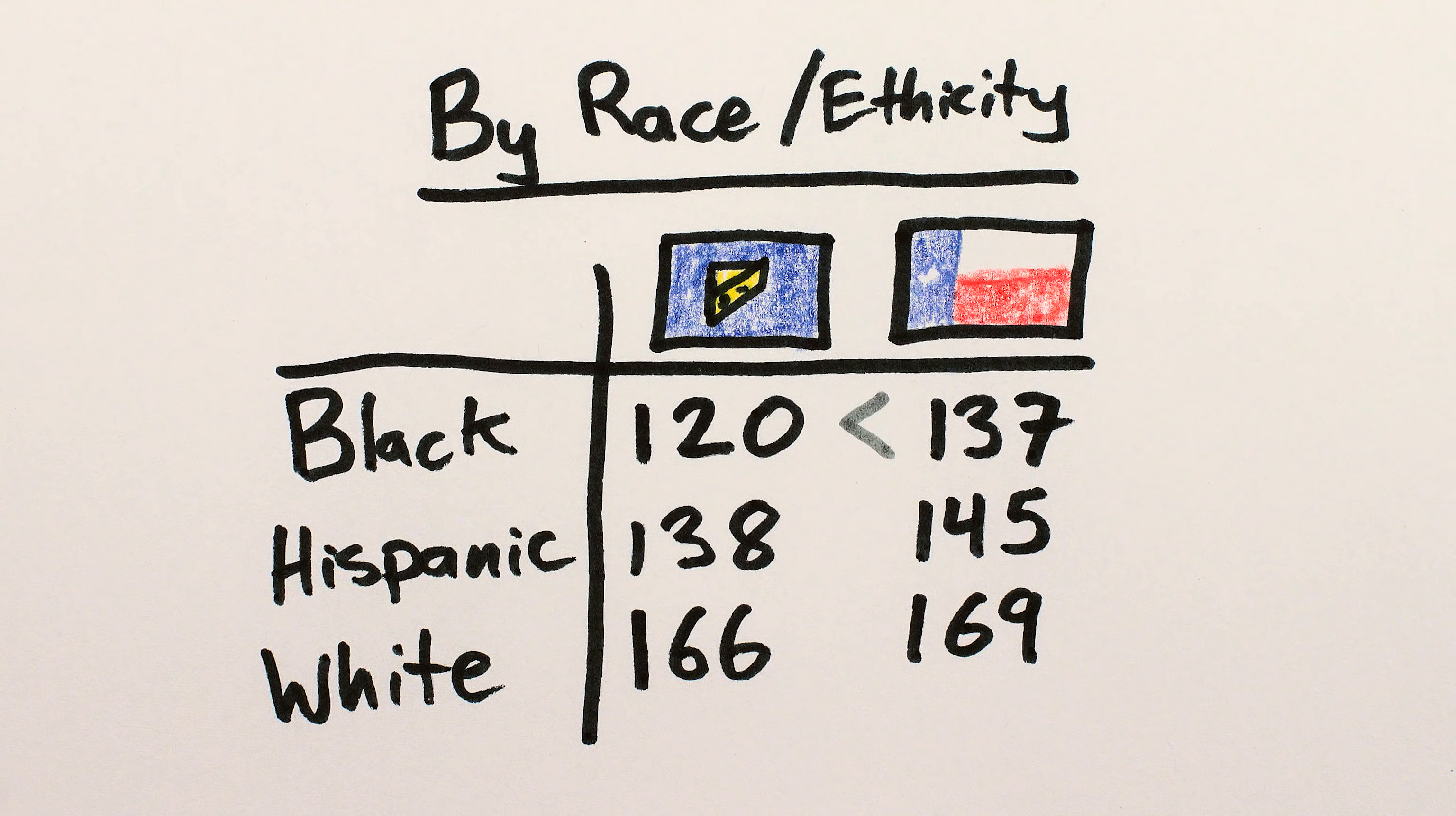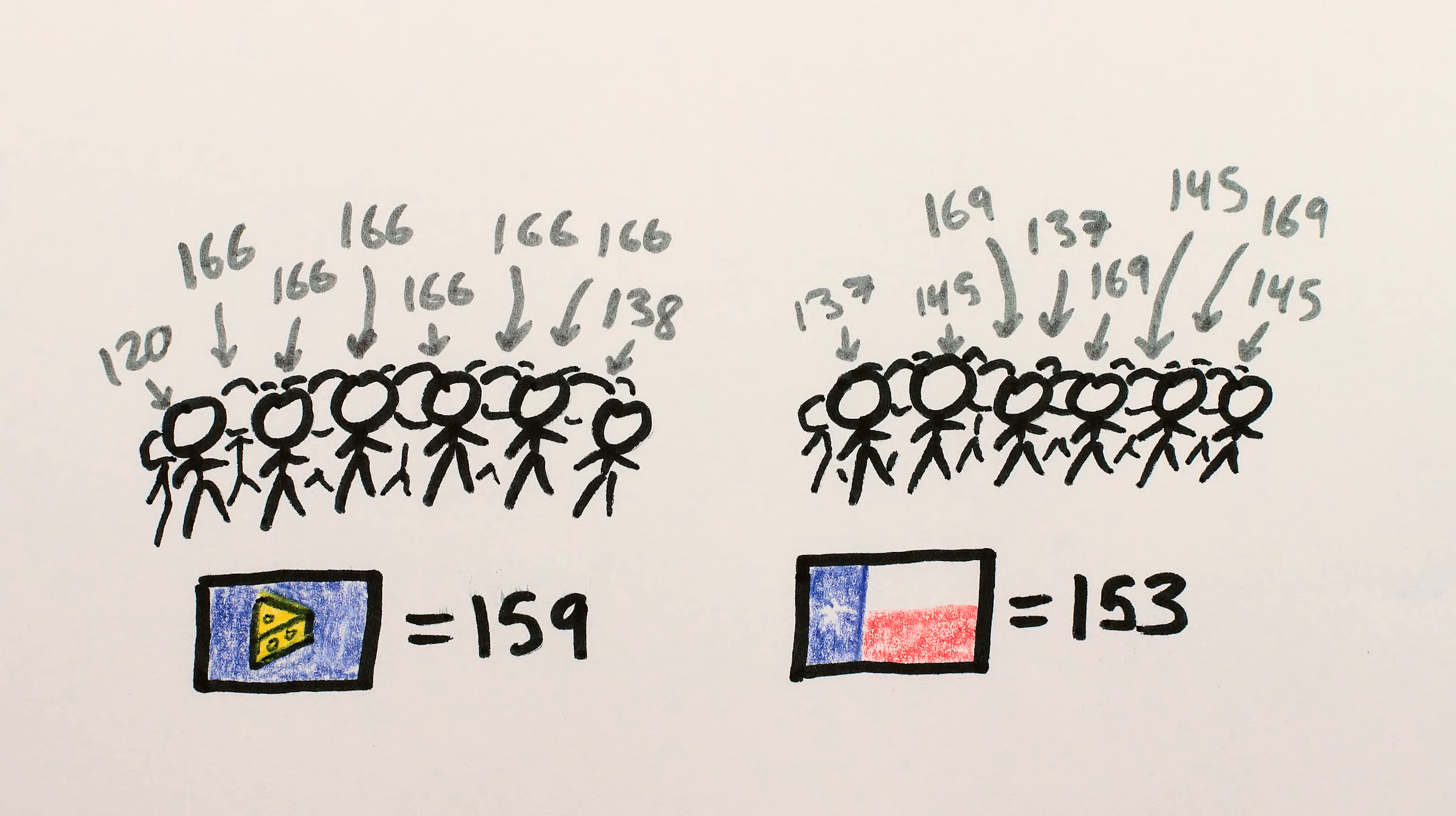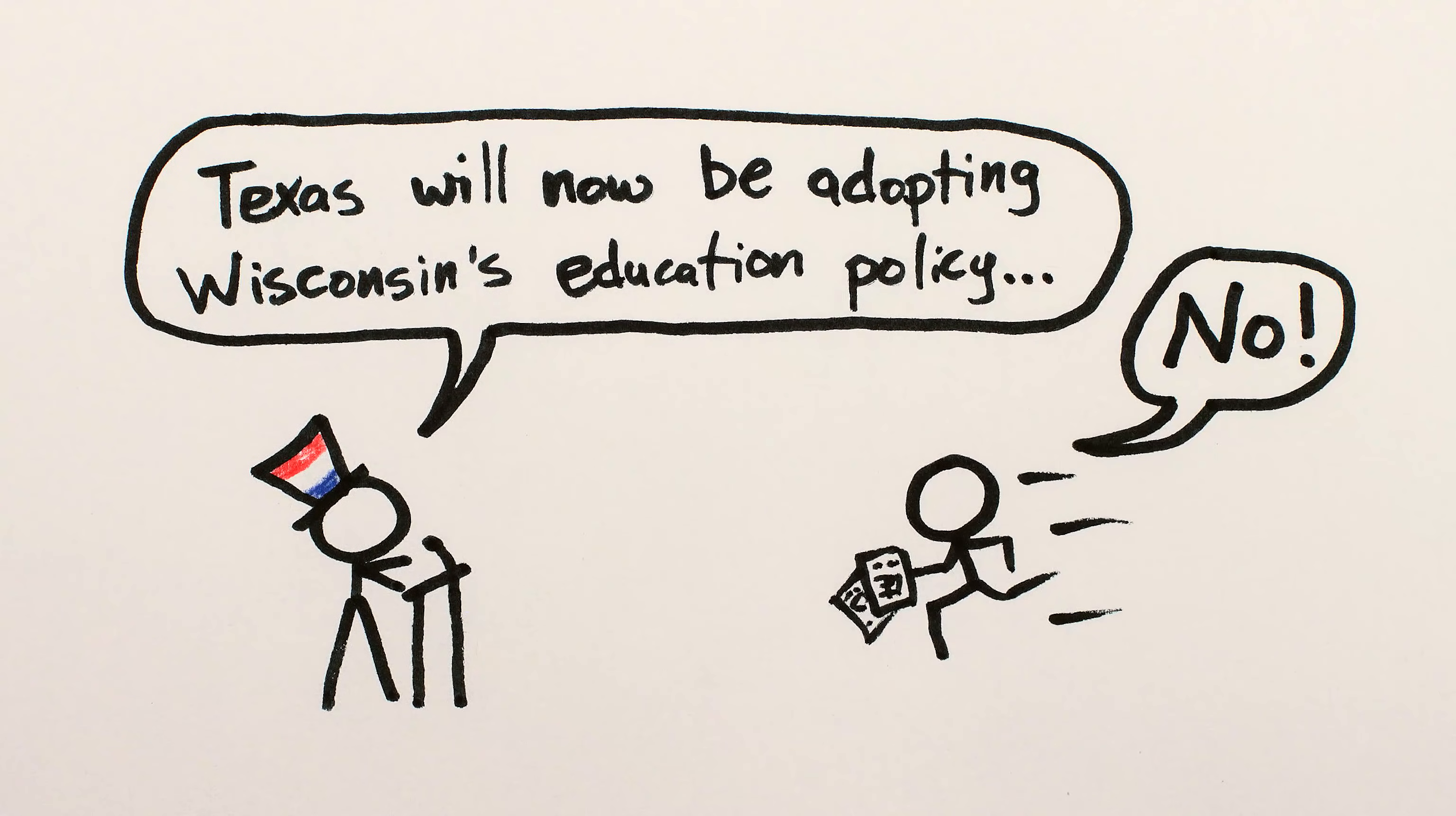Black Texas students scored higher than black Wisconsin students, and likewise with Hispanic and white students. The difference in the overall ranking is because Wisconsin has proportionally far fewer black and Hispanic students, and proportionally more white students than Texas. So the takeaway certainly shouldn't be that Wisconsin has better education than Texas, just that it has proportionally more socioeconomically advantaged students. So understanding the underlying causal context of statistics can have huge public implications.